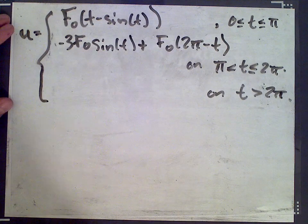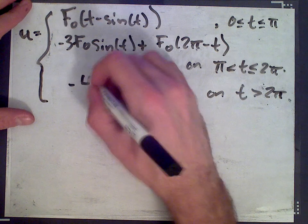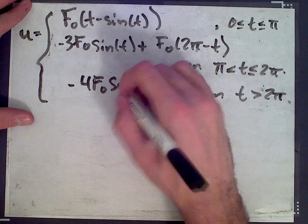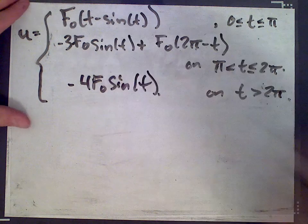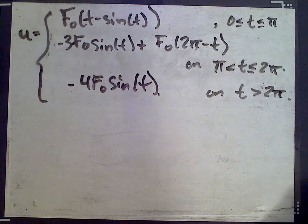Now, we get f1 was 0, and so we get negative 4 f0 sine t, and that is our solution.